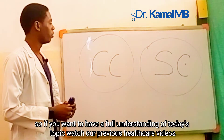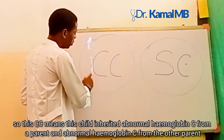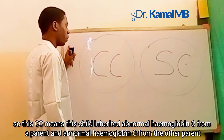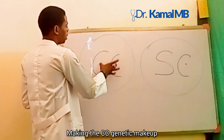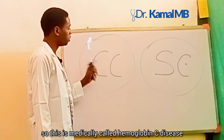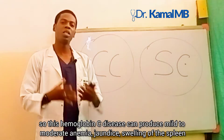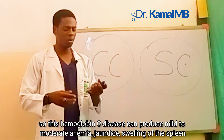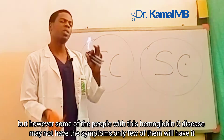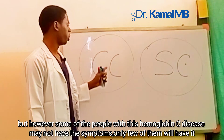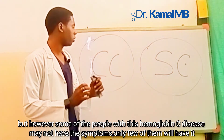CC means that this child inherited abnormal hemoglobin C from one parent and abnormal hemoglobin C from the other parent, making the CC genetic makeup. This is medically called hemoglobin C disease. Hemoglobin C disease can produce mild to moderate anemia and swelling of the spleen, but some people with this disease do not have these symptoms — only a few of them do.